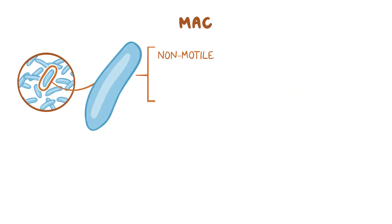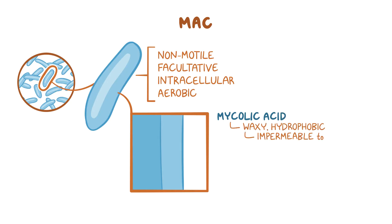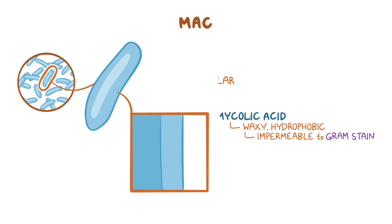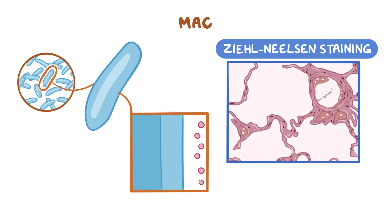MAC are non-motile, facultative intracellular bacteria, which means they can survive both inside and outside the cell. They're also aerobic, which means they need oxygen to survive. They have a high content of mycolic acid in their cell wall, which makes them waxy, hydrophobic, and impermeable to routine stains such as gram stain. So they need special staining methods to be visualized, such as Ziehl-Neelsen staining, which is able to penetrate the waxy mycobacterial cell wall.